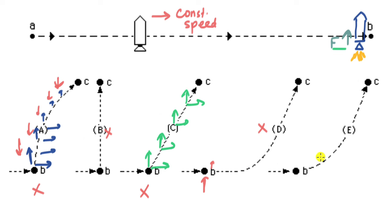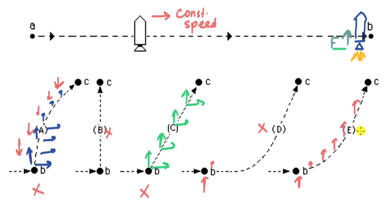Option E is the correct answer. A force starts acting at point B, so the rocket gains vertical velocity immediately. The force is constant, meaning constant vertical acceleration, so the vertical velocity is constantly increasing. This produces a curved path starting from point B, which is exactly what Option E shows.